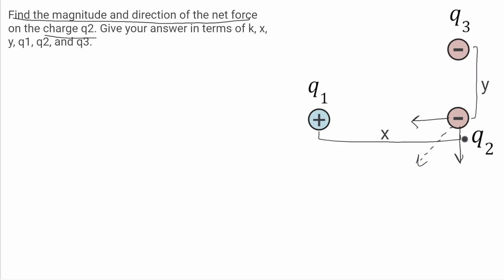Now, these arrows indicate the force. I'll call this one F3, because it'll be the force done by q3. And I'll call this one F1, because it's the force done by q1. And this resultant force, I'll just call F.